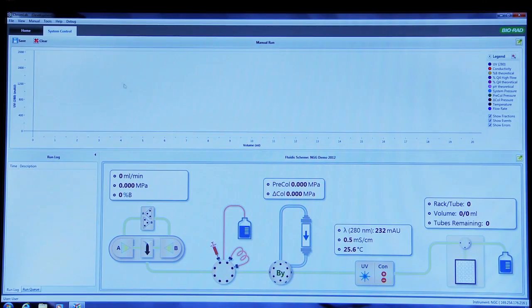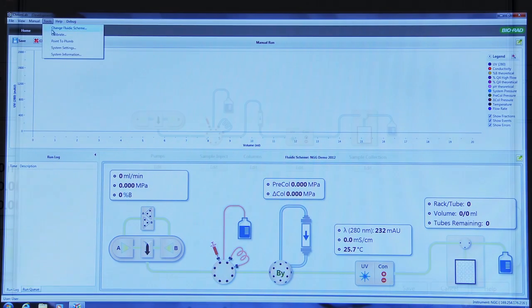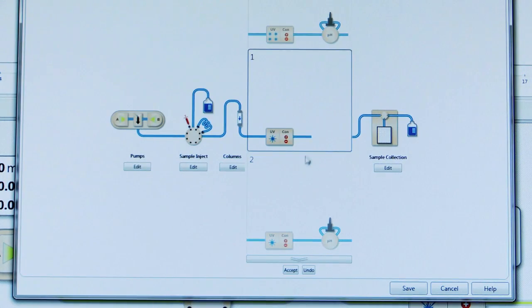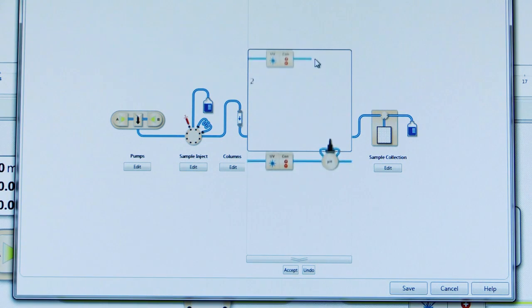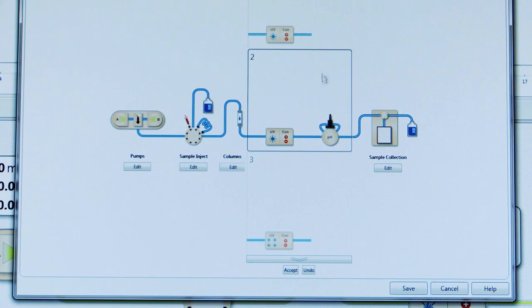Use Chrome Lab software to update your Fluidic scheme to reflect the installation of your new module. In this case, update with a pH valve added to the flow path.